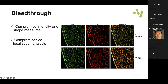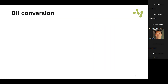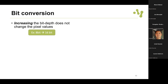Here we have sequential acquisition on the first row and simultaneous acquisition on the bottom row, and we can see the bleed-through. This also compromises co-localization analysis - if you're analyzing two specific markers and want to analyze how they co-localize, bleed-through makes the measurements unreliable, so you have to fix it at acquisition time. Bit conversion should also be used with caution.